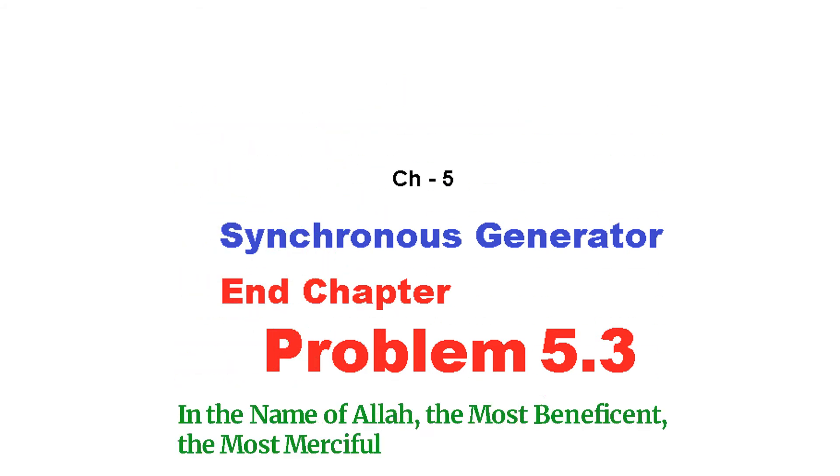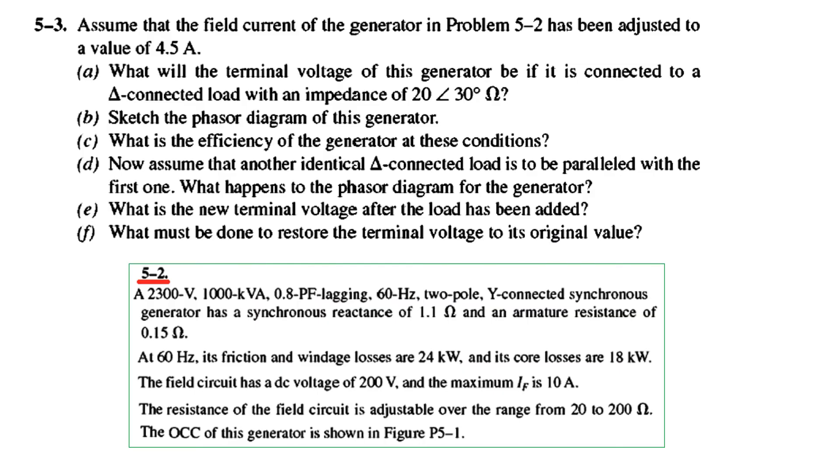Bismillahirrahmanirrahim. Today's video is about synchronous generator and primarily end chapter problem 5.3. Assume that the field current of the generator in problem 5.2 had been adjusted to a value of 4.5 Ampere. We have a reference to problem 5.2 reproduced. We use this parameter to solve this question.